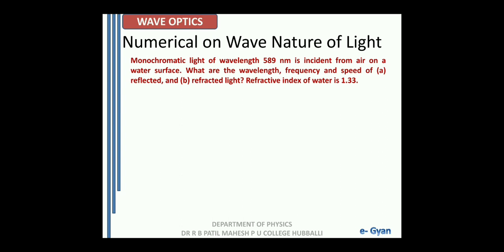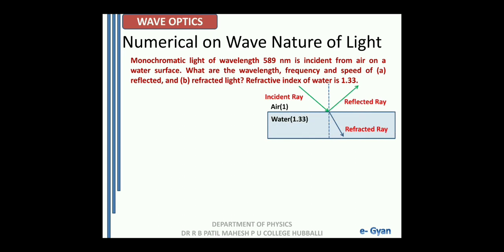Monochromatic light of wavelength 589 nanometer is incident from air on a water surface. What are the wavelength, frequency, and speed of reflected and refracted light? Refractive index of the water is 1.33.